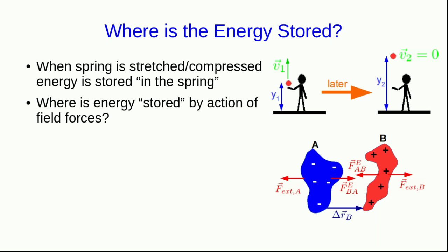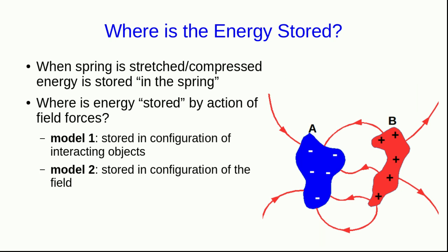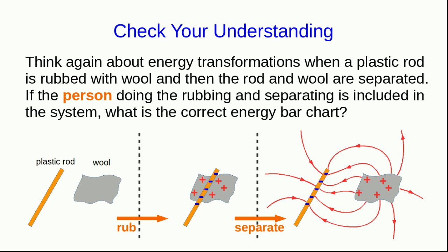One perspective is that it's stored in the configuration of the interacting objects. As we move them in both of these cases, we give more room for the field force to act over to do work on these objects. But an alternate way of viewing it is that the energy is stored in the configuration of the field. Literally, we think of it as being stored in the space containing the field. Since the field is just an abstraction and a way of thinking about the electrical interactions, these two models should be equivalent.